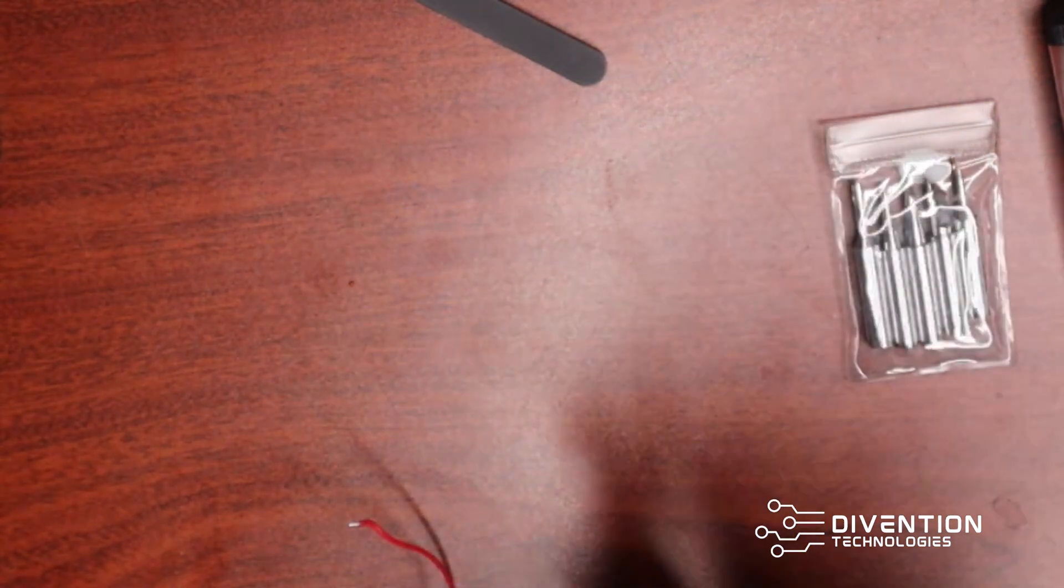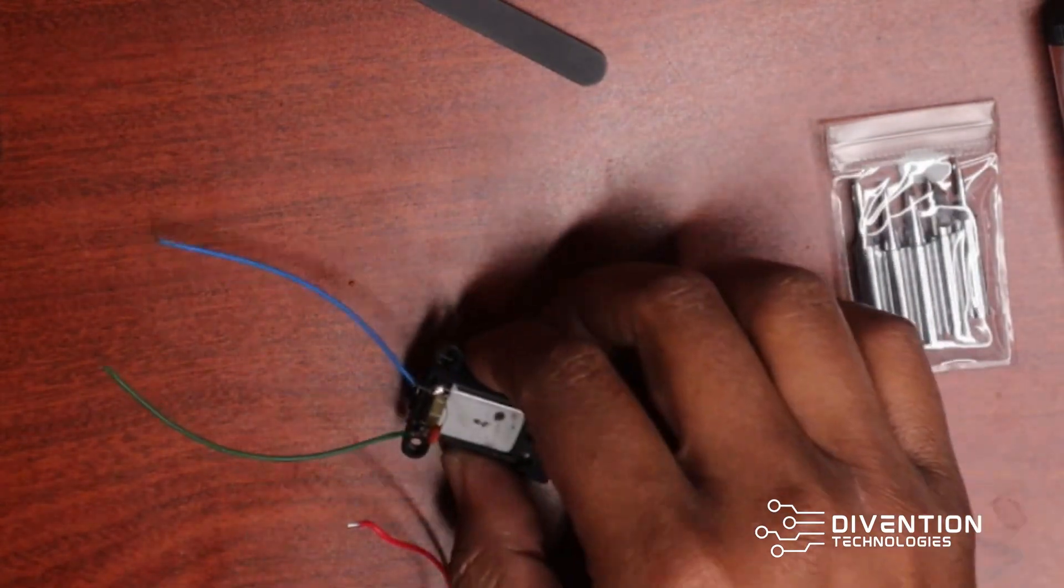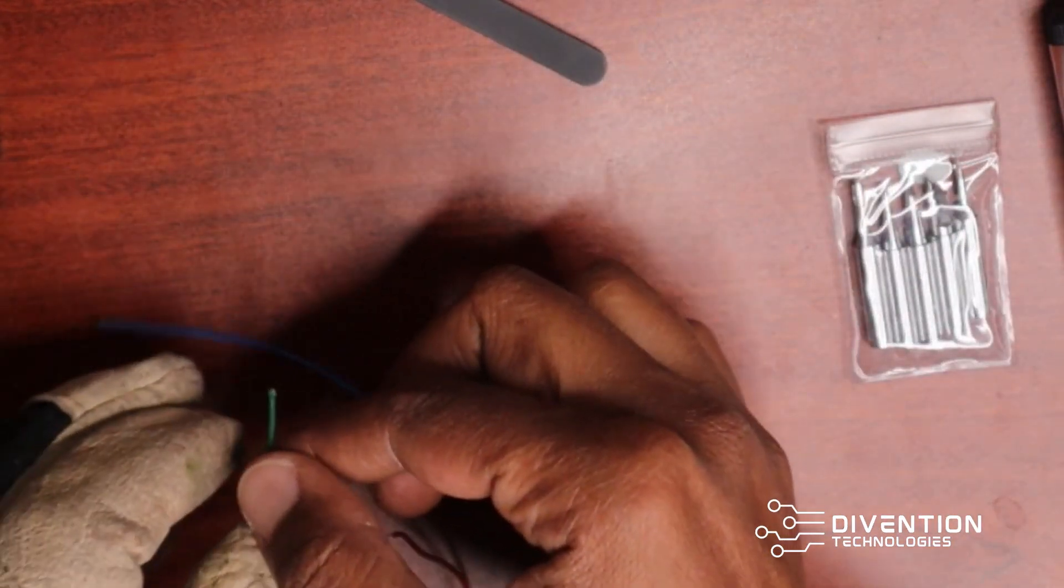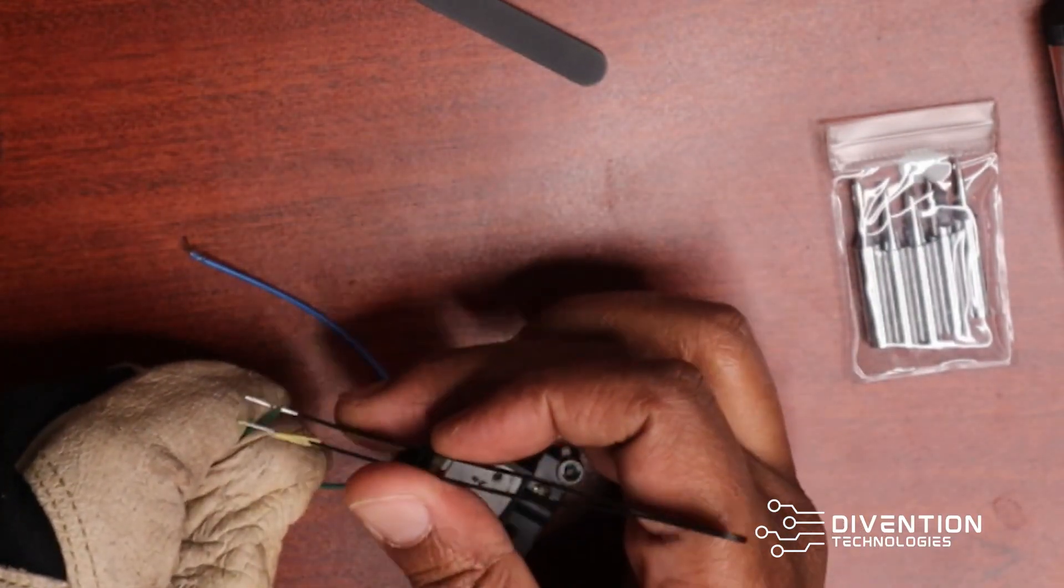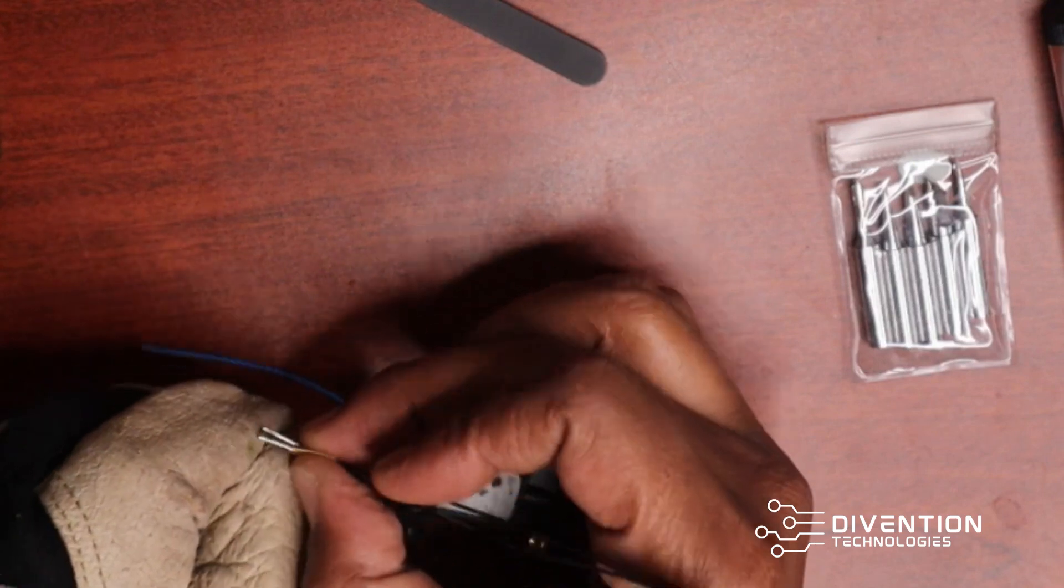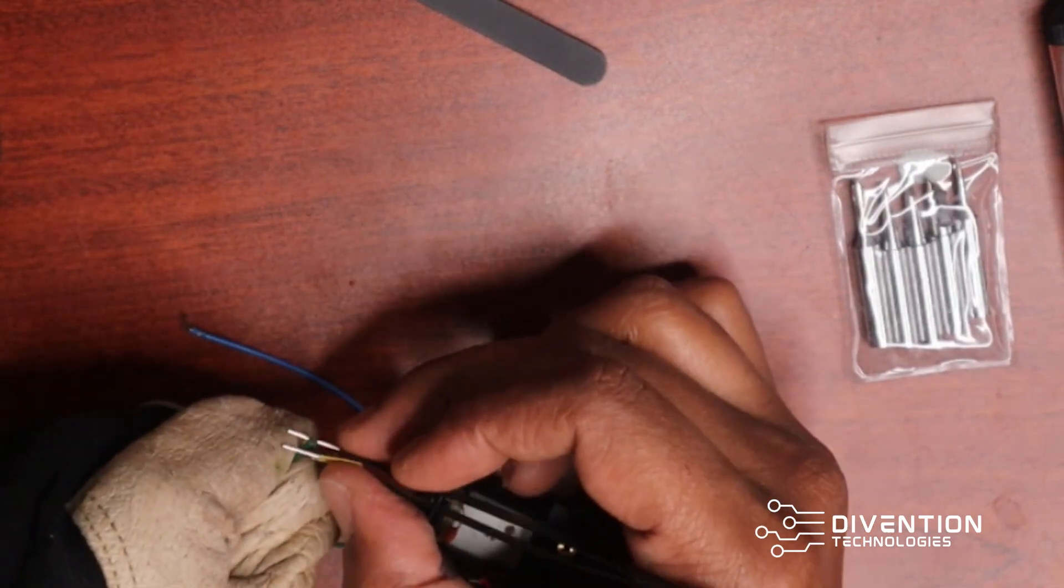So from the looks of this one right here, it looks like I need to pull some of the excess cabling off or the sheathing off of this. I'm going to try to do that really quick.